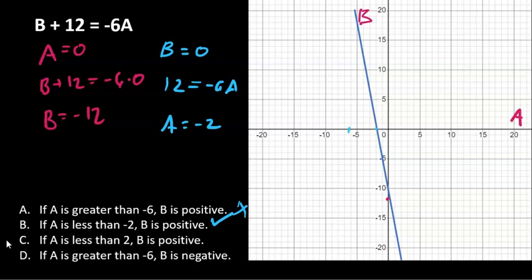Let's see that these are incorrect as well. If a is less than 2, b is positive. Less than 2, b can be either positive or negative. If a is greater than minus 6, b is negative. Greater than minus 6, again, b can be either positive or negative. So only B is the correct answer.